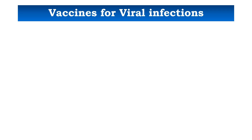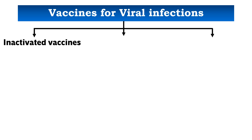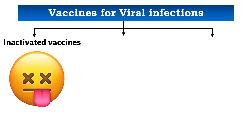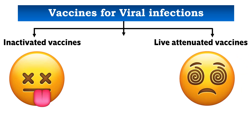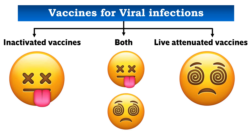The first group is called inactivated vaccines, also called killed vaccines. The second group is called live attenuated vaccines. For some viral diseases, we have both inactivated or killed vaccines plus live attenuated vaccines.